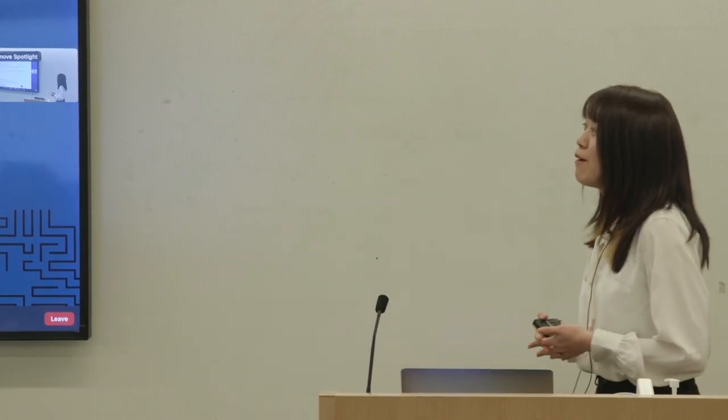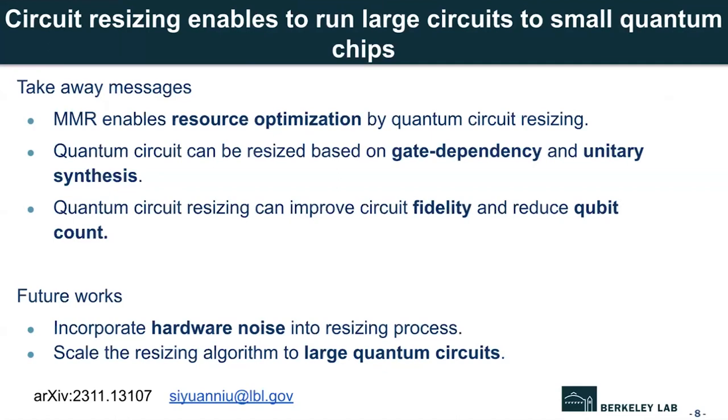So to conclude, first mid-circuit measurement and reset can enable some resource optimization opportunity by the technique circuit resizing. And we can resize the circuit based on gate dependencies, or we can make it resizable using unitary synthesis. And this method can reduce the qubit count and improve the circuit fidelity.